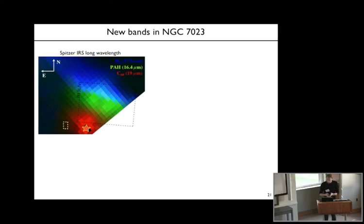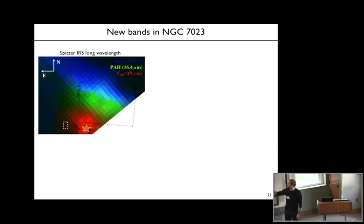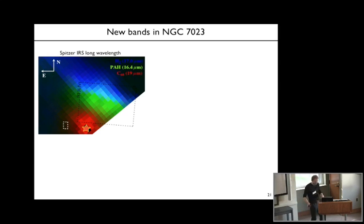Back to NGC 7023. In this color composite image I show the emission of different species. Molecular hydrogen in blue is situated in the region far from the star—the surface of the molecular cloud. Then you have emission from PAHs in the regions closer to the star. Really in the inner regions, very close to the illuminating star, you have the C60 emission at 19 microns, which is very strong.